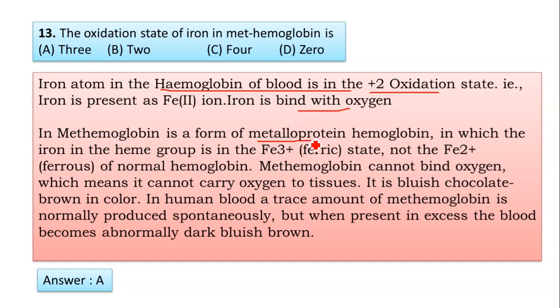But methemoglobin is a form of metalloprotein in which the iron in the heme group is in Fe³⁺ ferric state, not in Fe²⁺. So methemoglobin cannot bind oxygen, which means it cannot carry oxygen to tissues. It is bluish chocolate-brown in color. In human blood, a trace amount of methemoglobin is normally produced spontaneously, but when present in excess, the blood becomes abnormally dark bluish-brown. So the correct option is A, the oxidation state is +3, that is Fe³⁺ in methemoglobin.